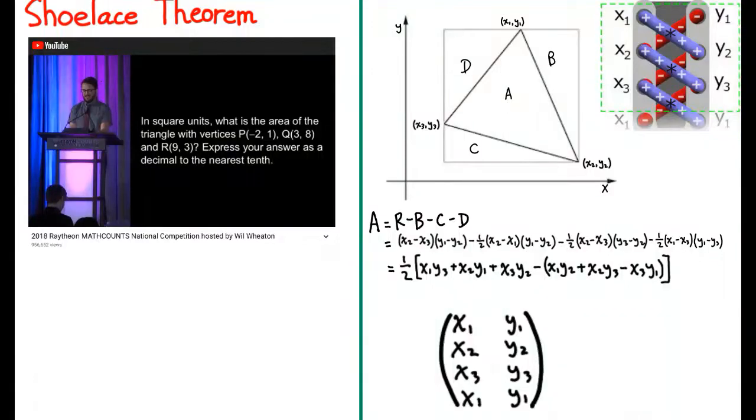We're going to be doing a problem from the 2018 Mass Counts National Competition. This problem states that in square units, what is the area of the triangle with vertices P at negative 1, 1, Q at negative 3, 8, and R at 9, 3? Express your answer as a decimal to the nearest tenth.